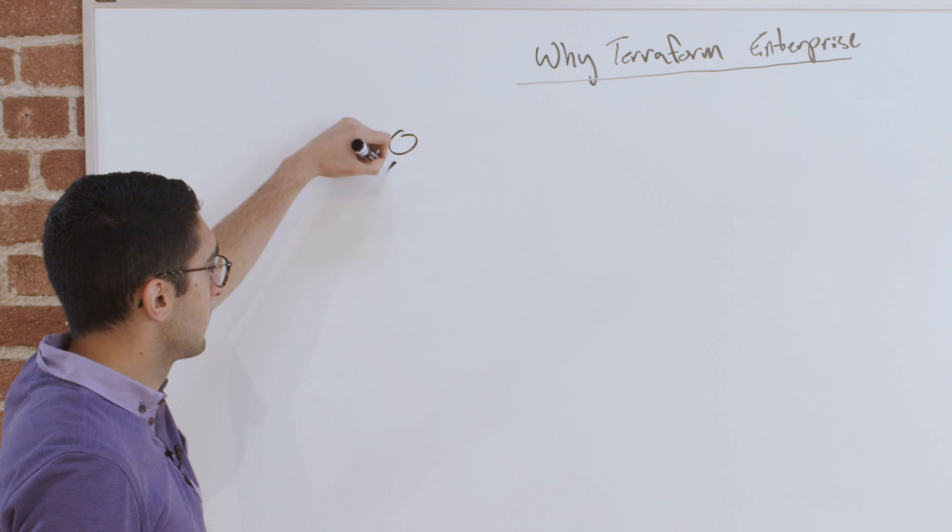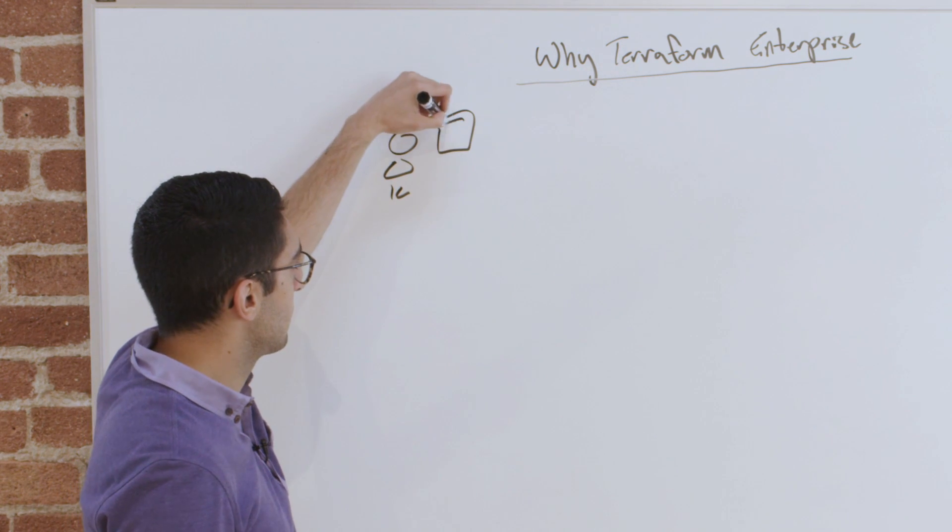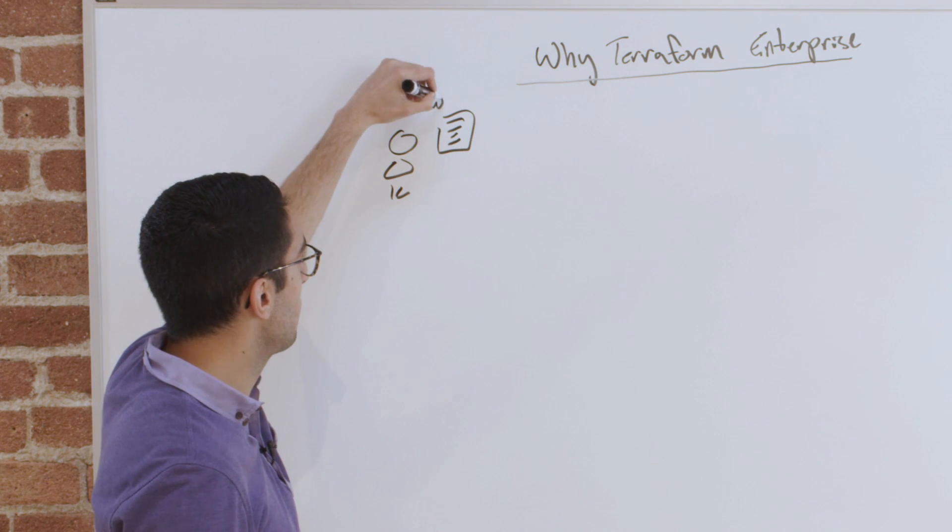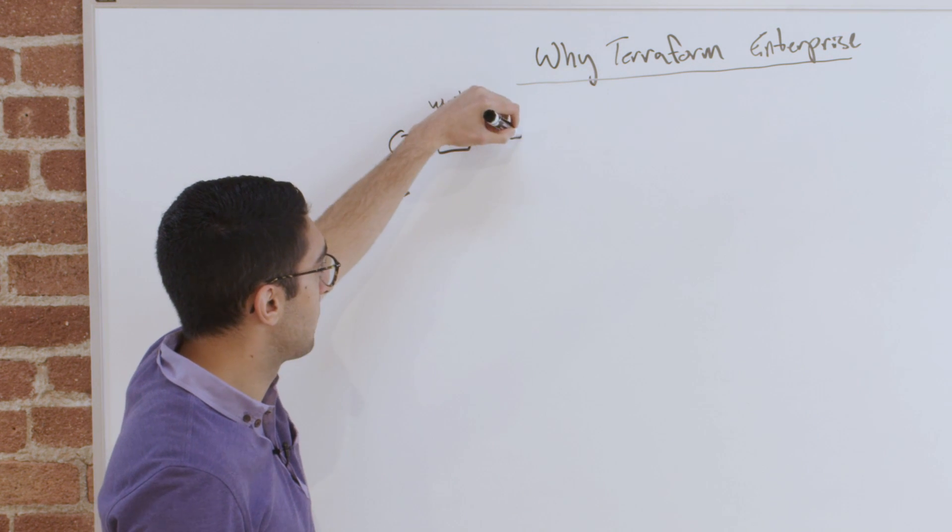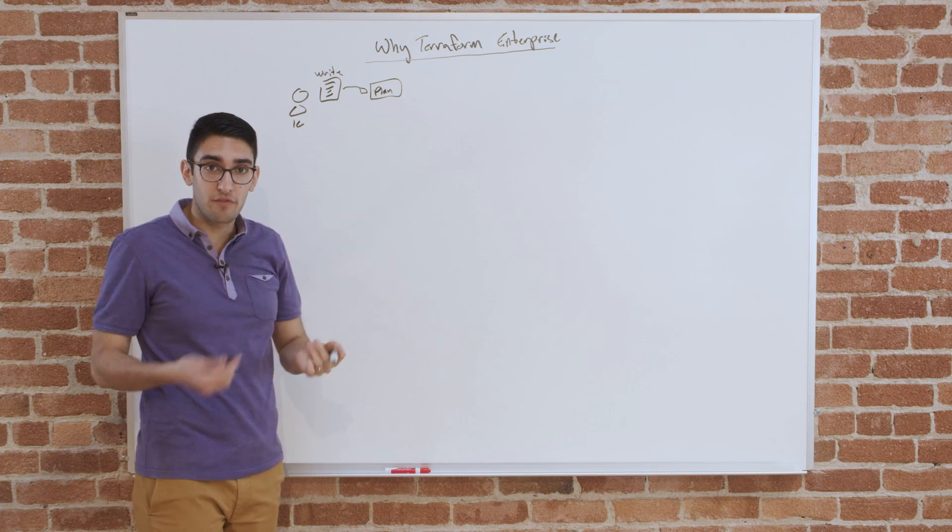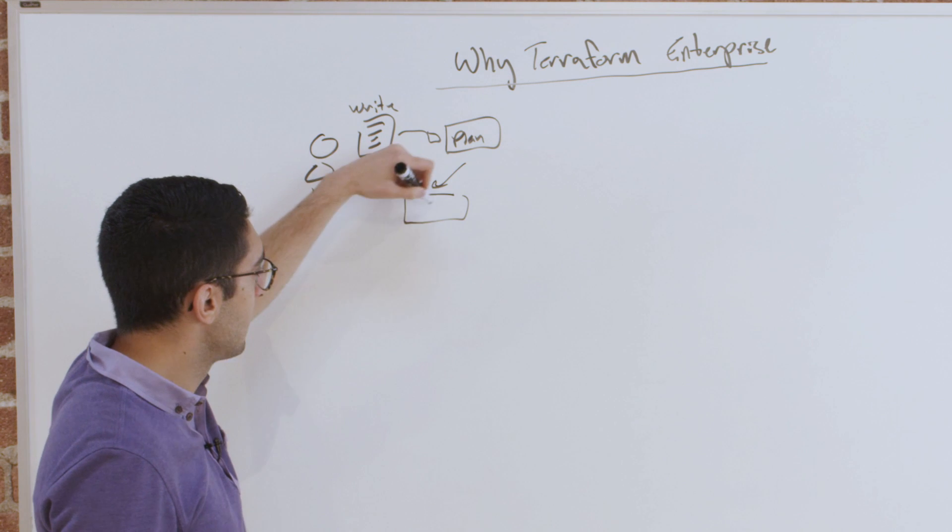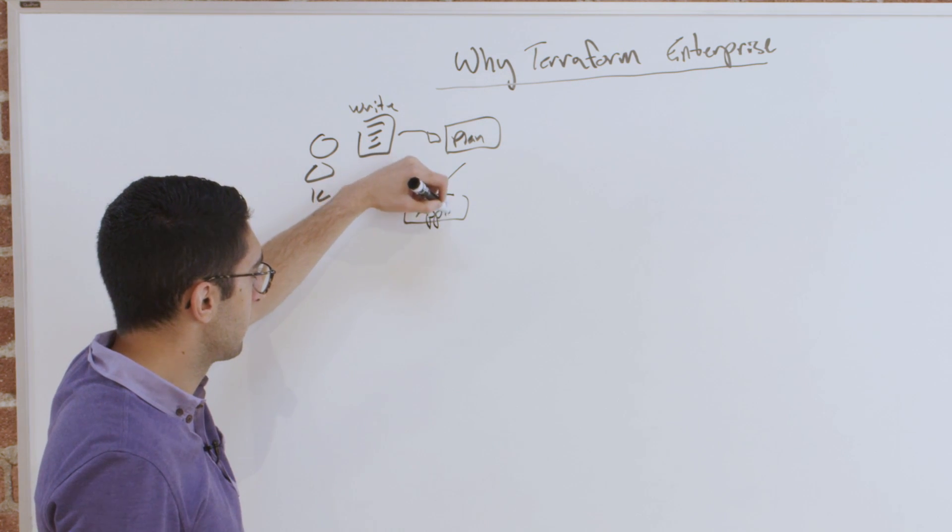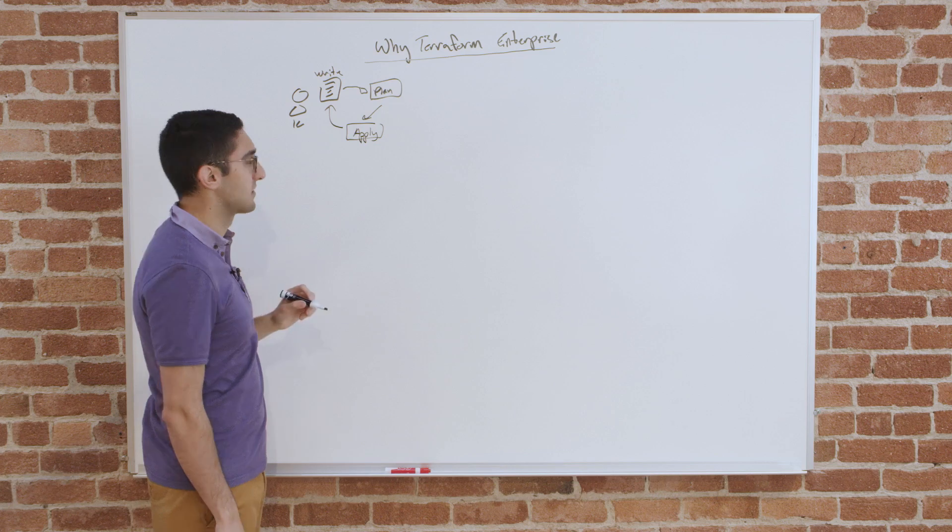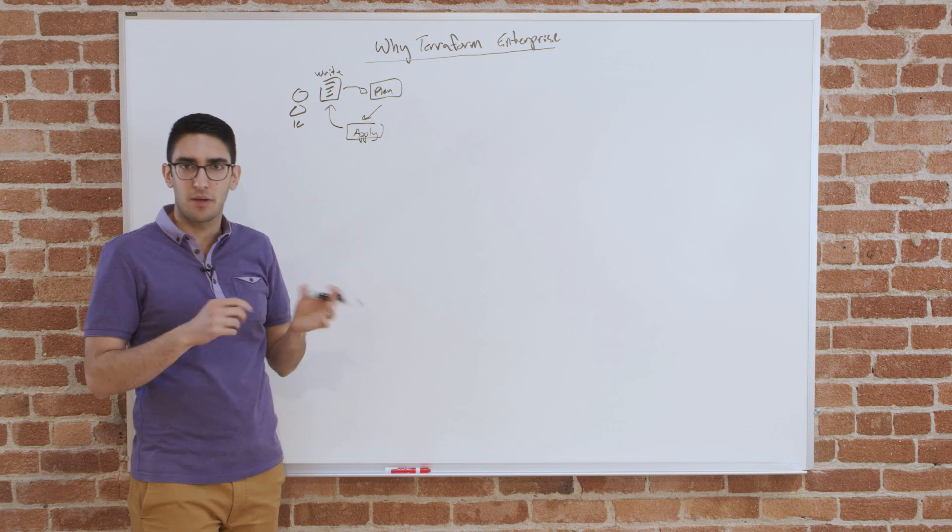So when we talk about an individual using Terraform, their pattern is: I locally write some Terraform, then I do a plan operation where you can see what is this going to change, validate my change makes sense, then I do a local apply to make those changes, and then I continue on this loop. Much like writing software, it's that iterative process of write, test, apply.